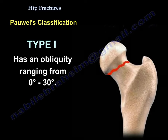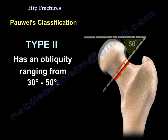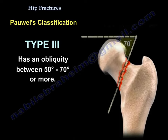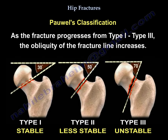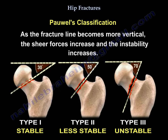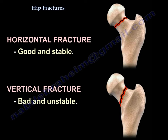Type 1 has an obliquity of less than 30 degrees. Type 2 has an obliquity from 30 to 50 degrees. Type 3 has an obliquity between 50 to 70 degrees or more. As the fracture progresses from type 1 to type 3, the fracture line becomes more vertical, shear forces increase, and instability increases. Horizontal fractures are stable; vertical fractures are unstable.